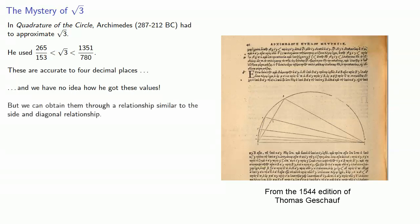But we can obtain them through a relationship similar to the side and diagonal relationship. So to begin with, we might ask ourselves, where do we see square root of 3?